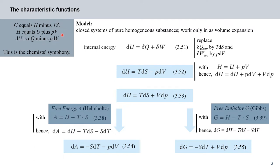When considering thermodynamic equations, I always found the following quite useful — what I call the chemist's symphony. G equals H minus TS; H equals U plus PV; DU equals DQ minus PDV. The second line defines enthalpy H as the internal energy plus the product of pressure and volume. The third line is a special case of the first law where the only work performed is volumetric expansion — that's our PDV term.